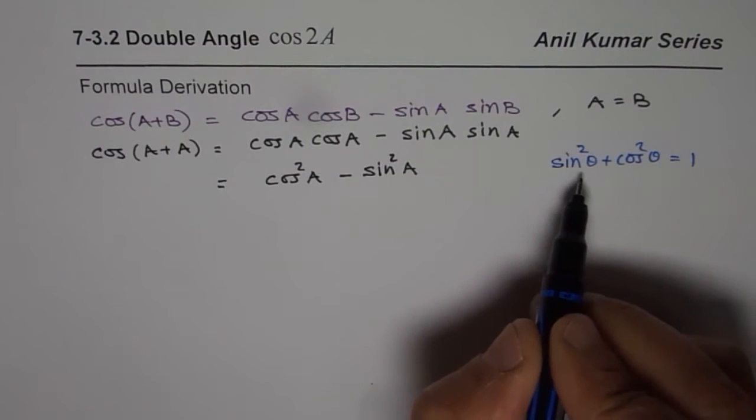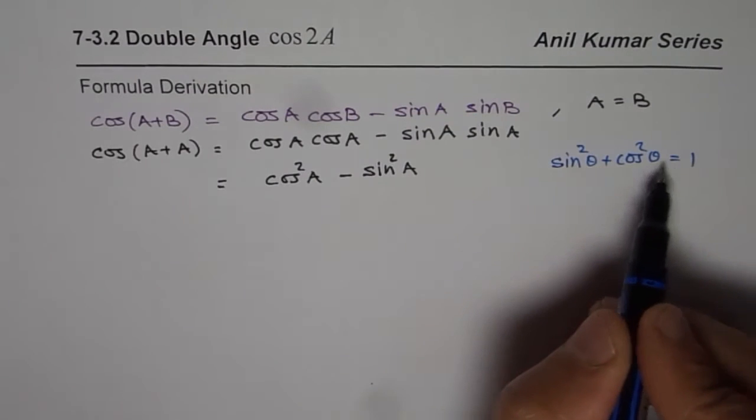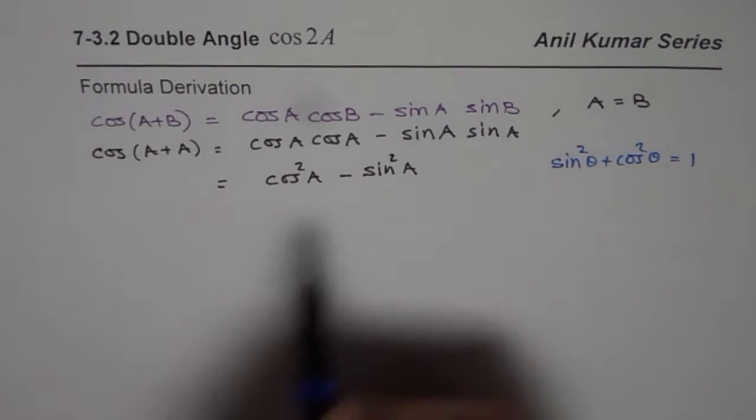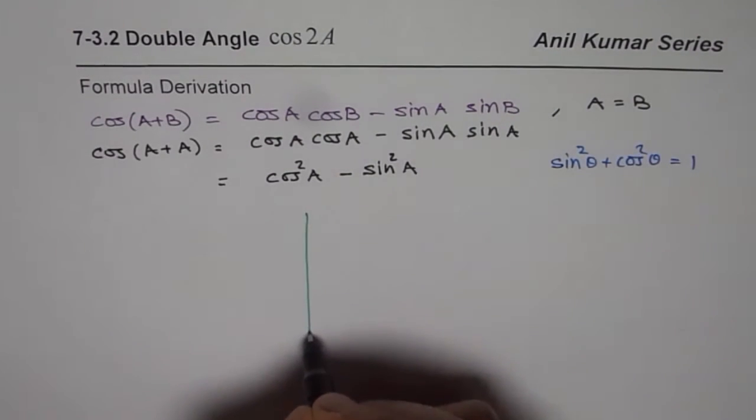So we can actually rearrange this. For cos square A, if I write 1 minus sin square A, then we get one identity. So what we will do from here is we will derive two other formulas.